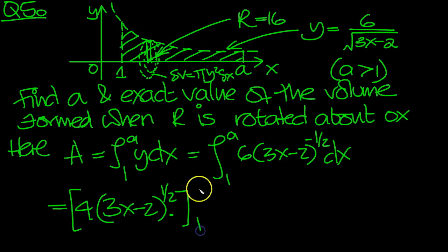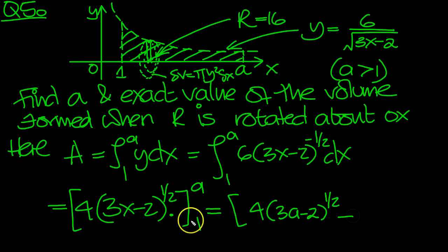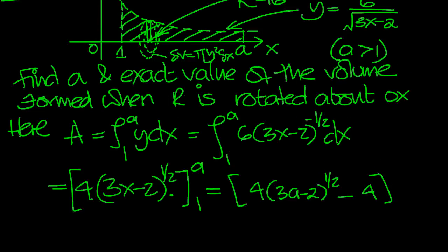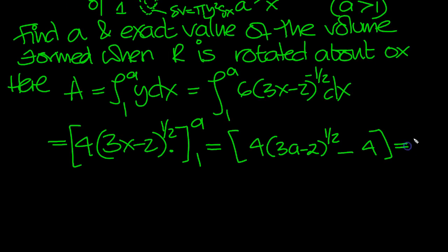So this is needing to be evaluated between 1 and a. So we've got 4. Top value then, put a in. We've got 3a minus 2 to the half. Minus, put the bottom value in here. 3 times 1 is 3, minus 2 is 1. 1 to the half is still 1. 4 times 1 is 4. So top value is that, bottom value is that. Top take bottom. So we know that's equal to 16.